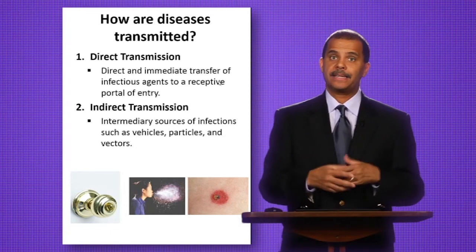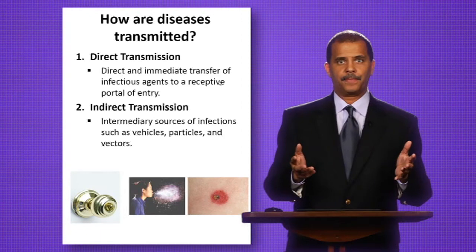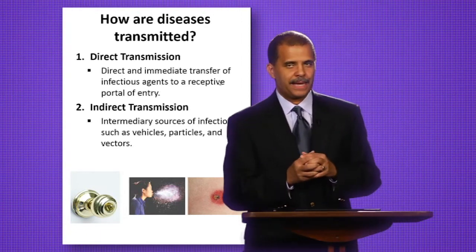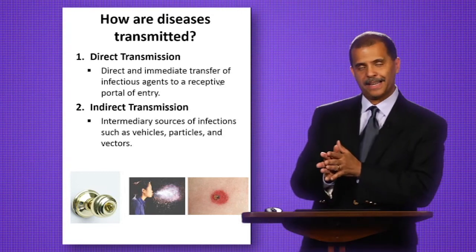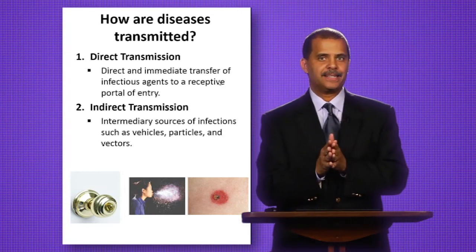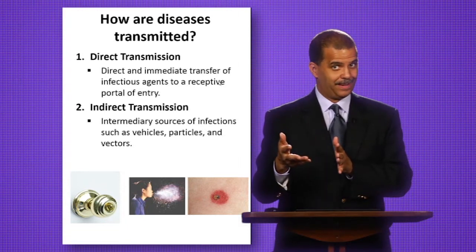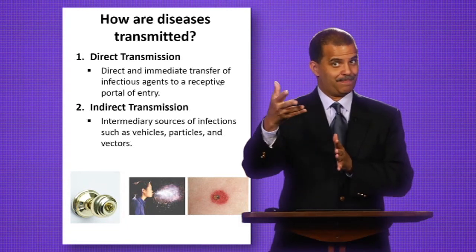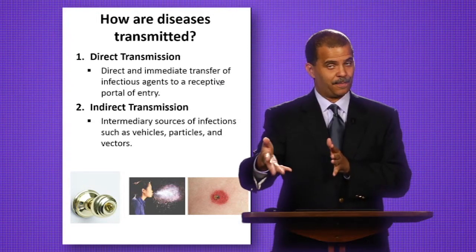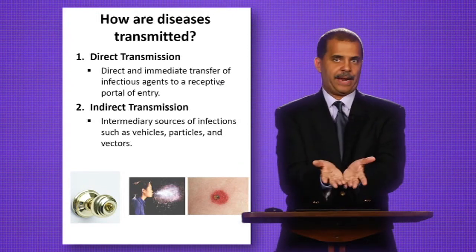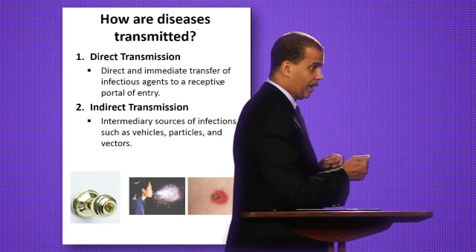The other way is indirect transmission. One way is a doorknob. If you notice bathroom behavior — you go to the bathroom, and then you wash your hands. So after you've washed your hands, if you still have to turn off the water, how do you do that? Do you touch the water faucet and perhaps reinfect yourself? Or if it's automatic, you just stick your hands underneath, water comes, no problem. And then you go to the door.